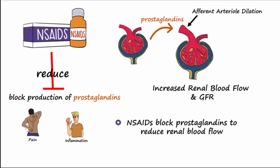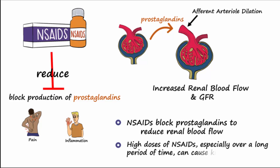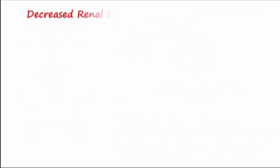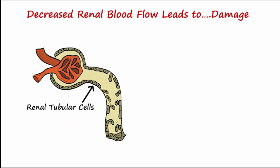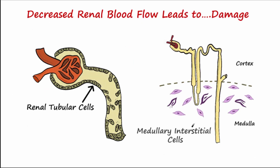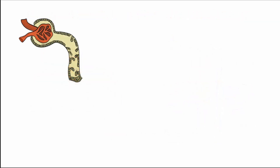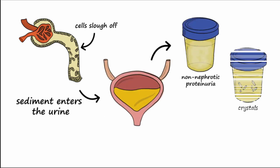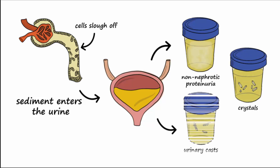So in high doses, especially over a long period of time, this isn't healthy for the kidneys. This decrease in blood flow can damage the renal tubular cells and medullary interstitial cells. With time, cells slough off, and sediment enters the urine, which now contains excess protein, crystals, and urinary casts.